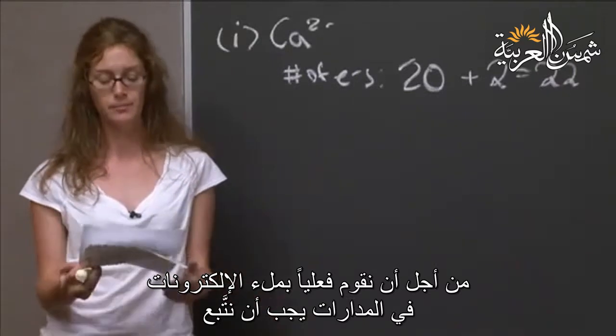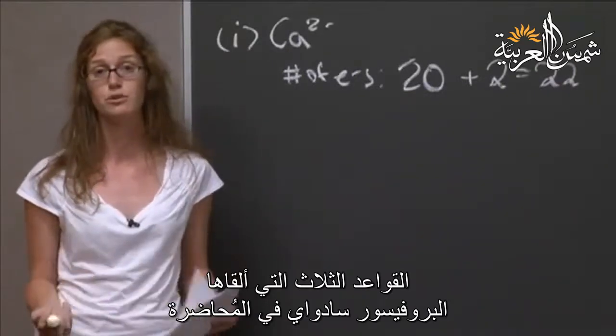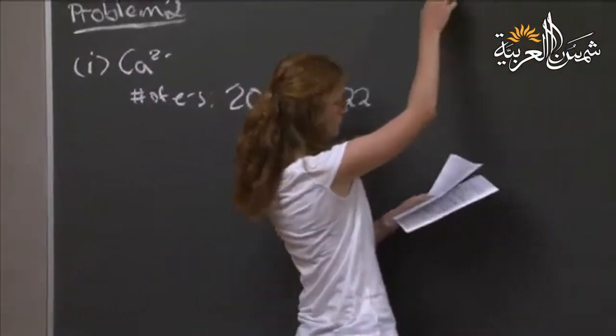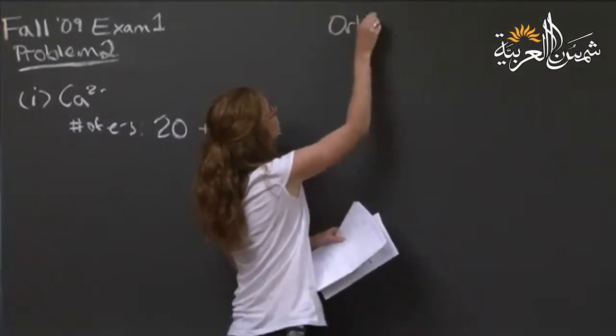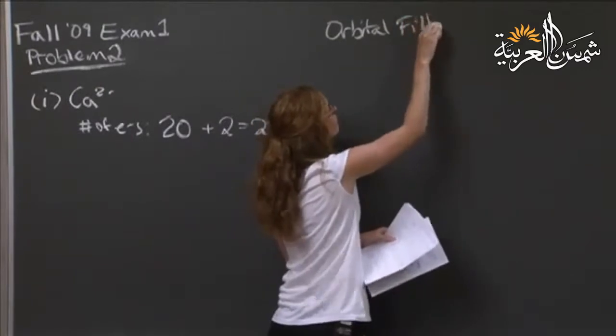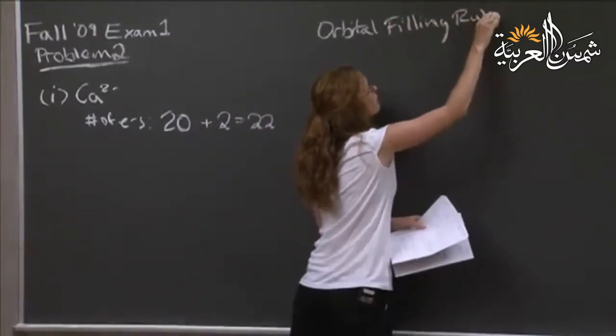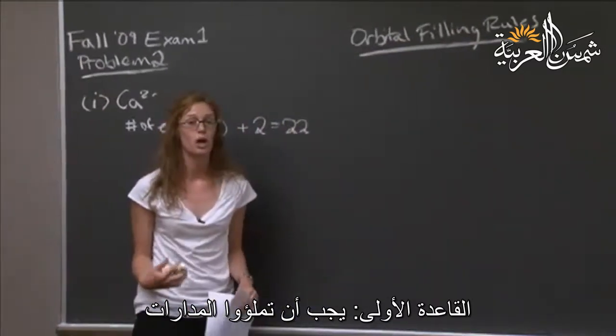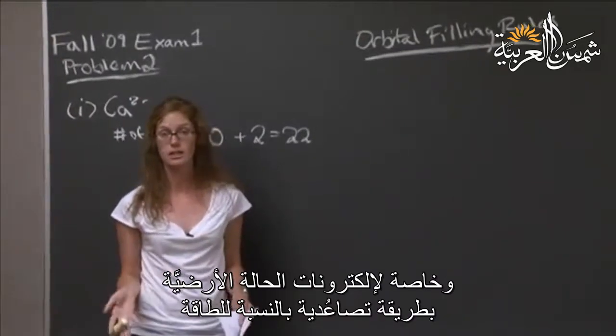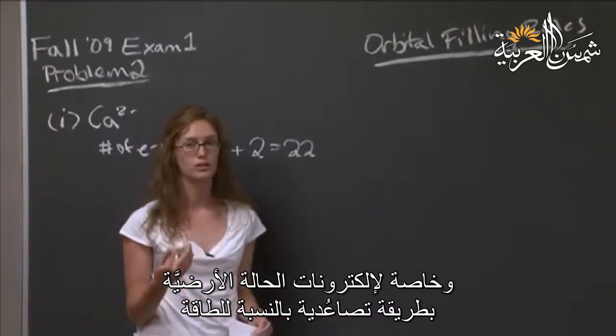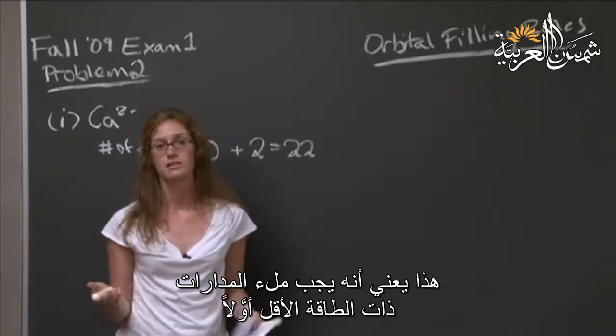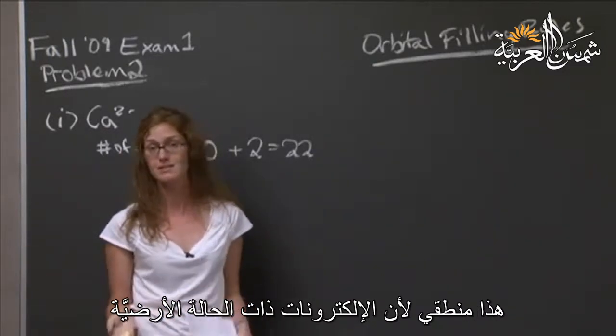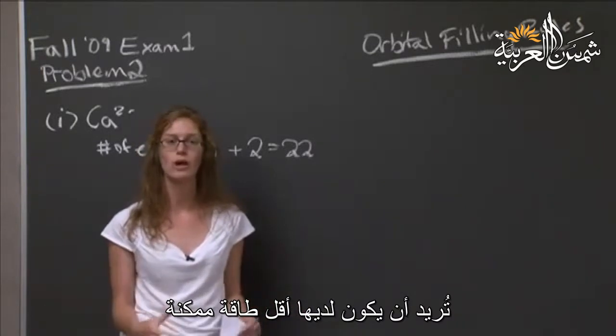In order to actually do the assigning, we need to follow the three rules that Professor Sadoway introduced in class. The first rule is that you need to fill them, at least for a ground state species, in order of increasing energy. That is, you want to fill up the lowest energy orbitals first, and then move to the higher energy orbitals. This makes sense because ground state species want to have the lowest total energy possible.